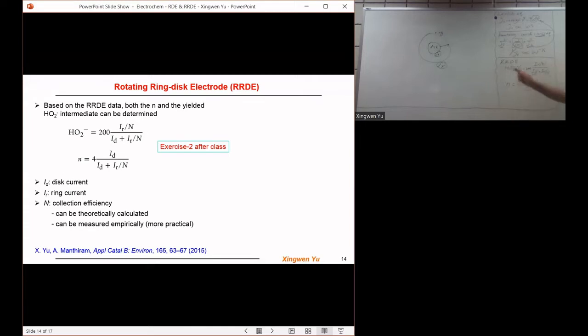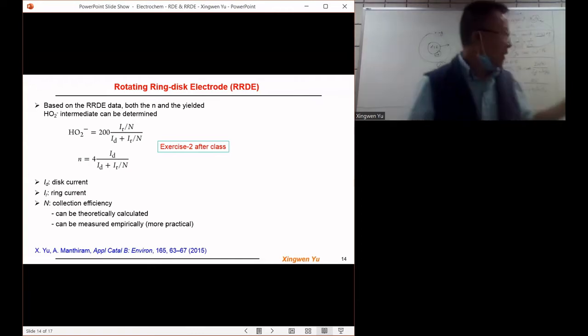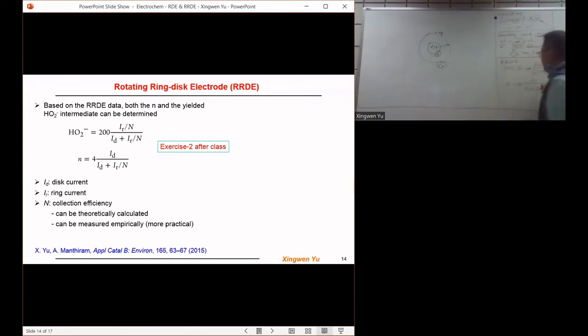IR, these numbers are just current. So we can use J to represent the current density. We can change the I here into J and the current density will be obtained from the equation.